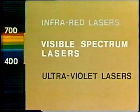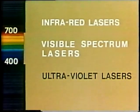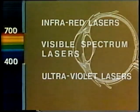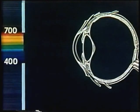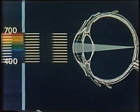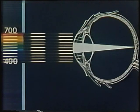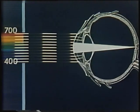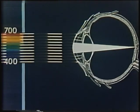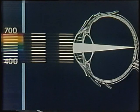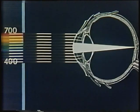Various wavelengths cause damage to different parts of the eye. In the visible region, most of the radiation is focused by the lens onto the retina — the usual place of injury. The focusing effect increases the intensity of the radiation on the retina.